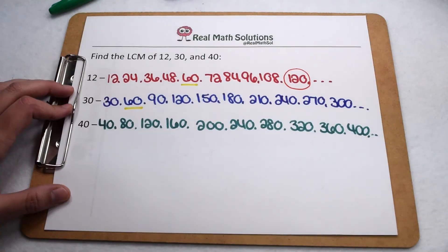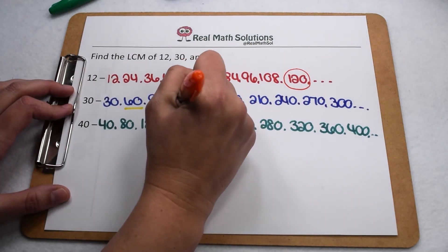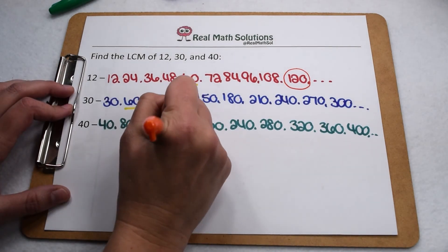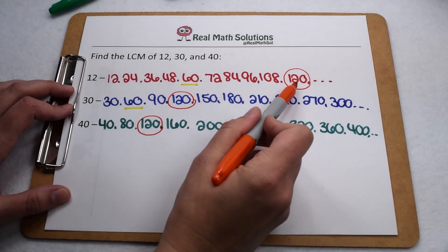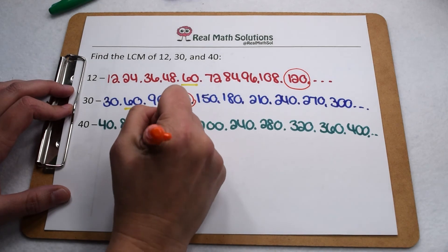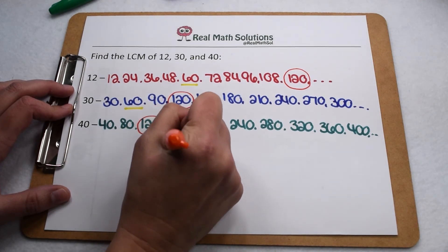We see 120 appears on our list for 12, 120 appears on our list for 30, and 120 appears on our list for 40. So since that's the first multiple that all three values have in common, it's our least common multiple.